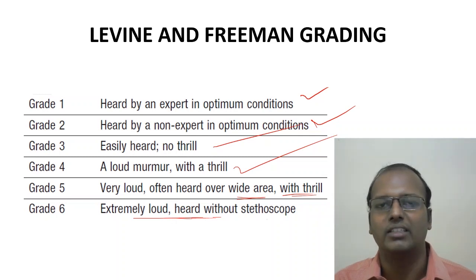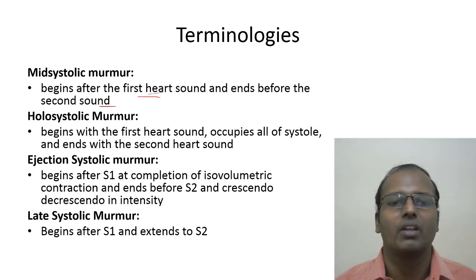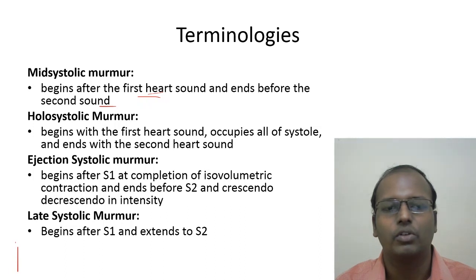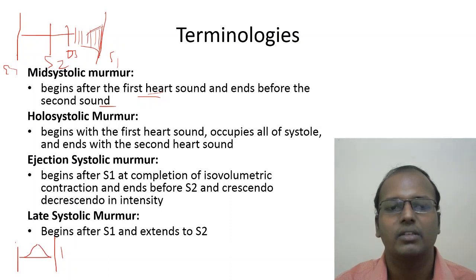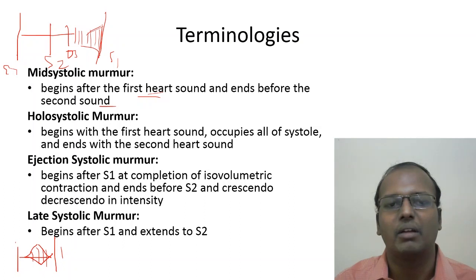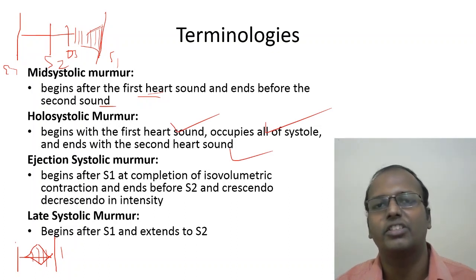Murmur terminology: mid-systolic murmur begins after S1 and ends before S2. Holosystolic (pansystolic) murmur begins with S1, occupies all of systole, and ends with S2 — classically heard in mitral regurgitation, tricuspid regurgitation, and VSD. Ejection systolic murmur begins after isovolumetric contraction, ends before S2, and is crescendo-decrescendo (diamond-shaped) in nature, beginning after the ejection click. Late systolic murmur begins after S1 but extends to S2 — heard in mitral valve prolapse syndrome.